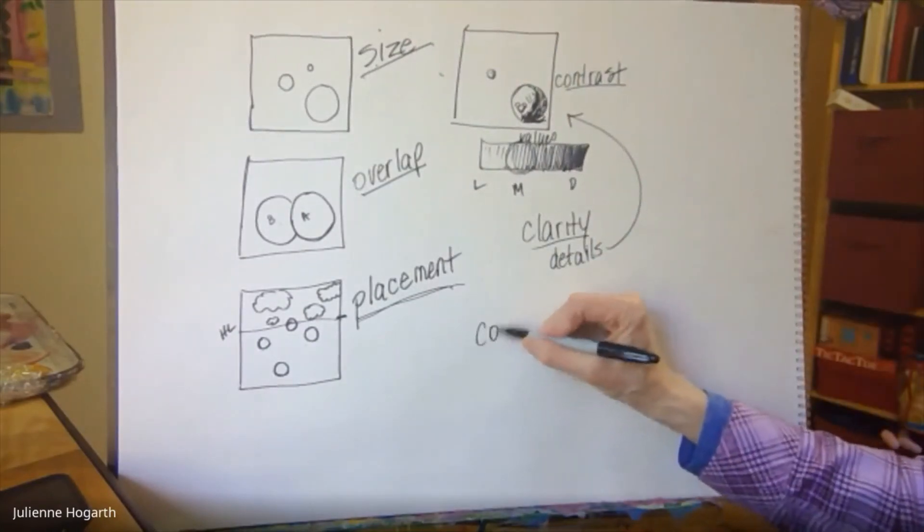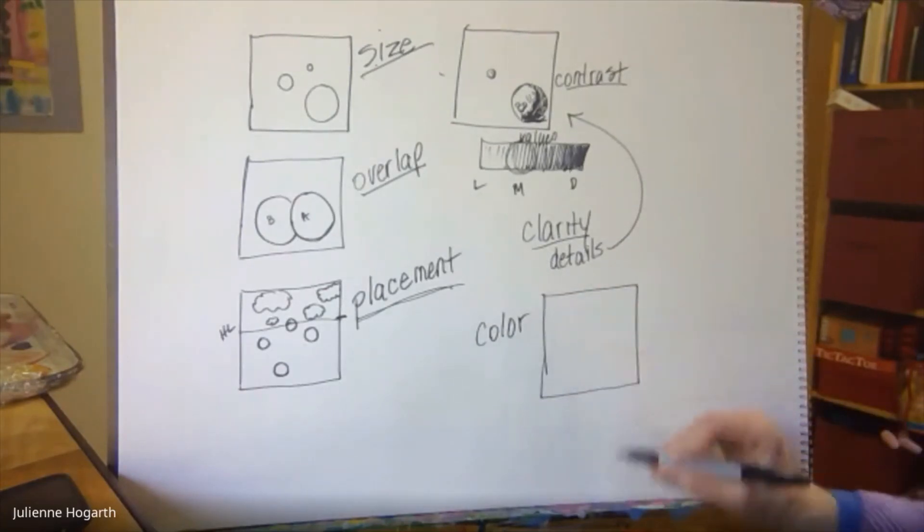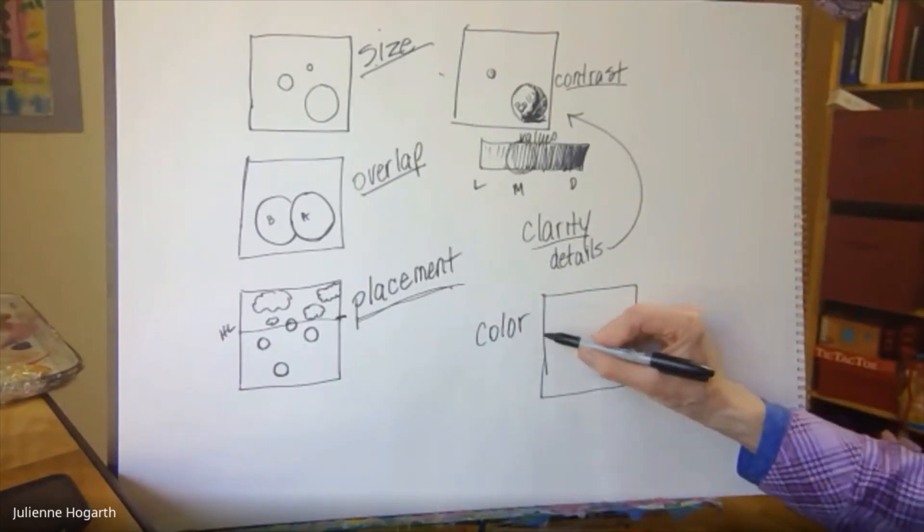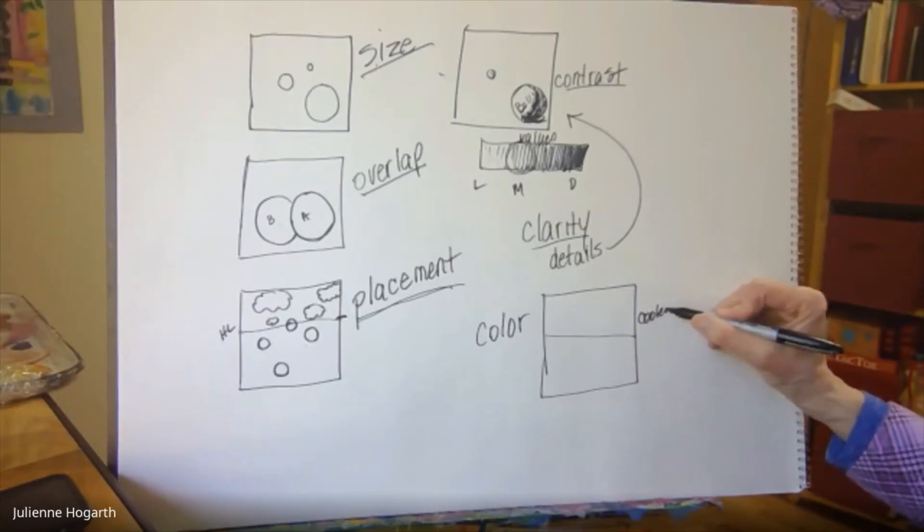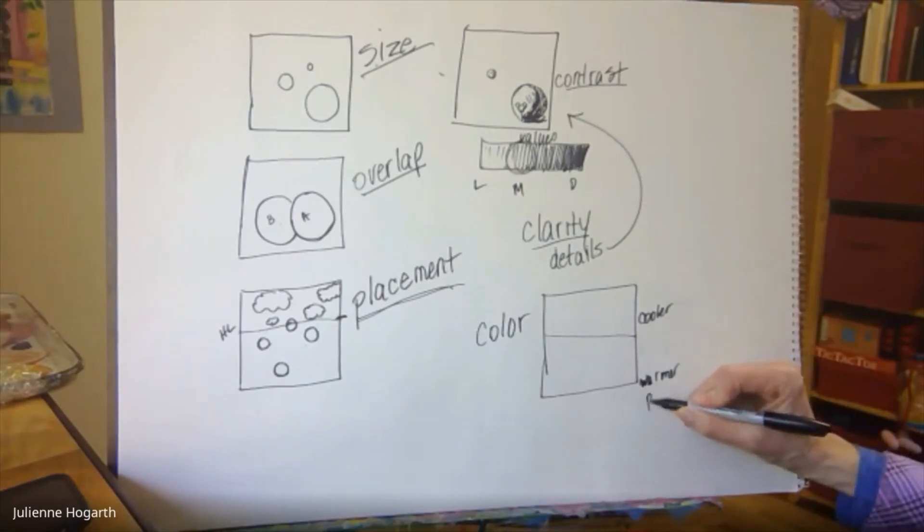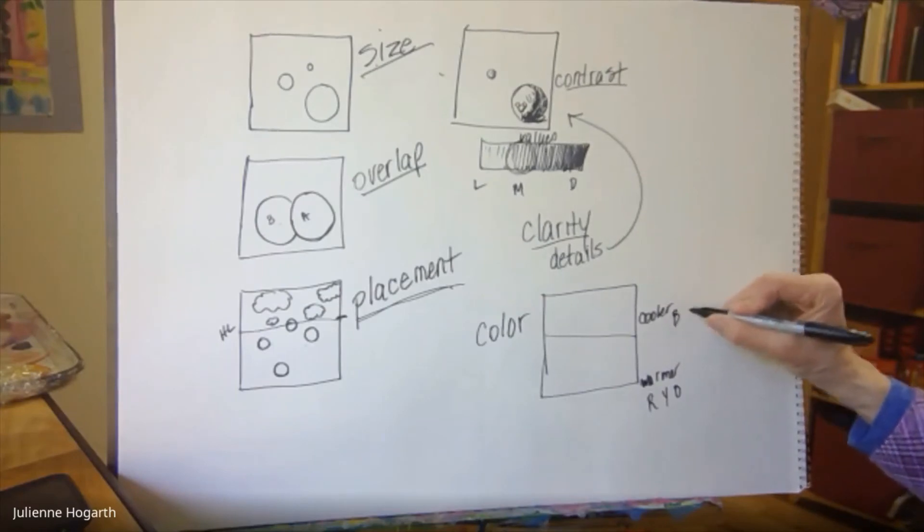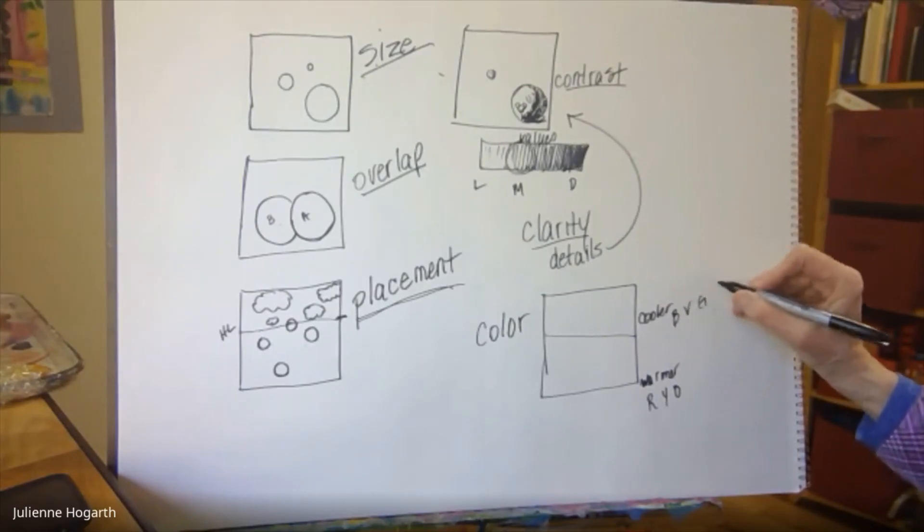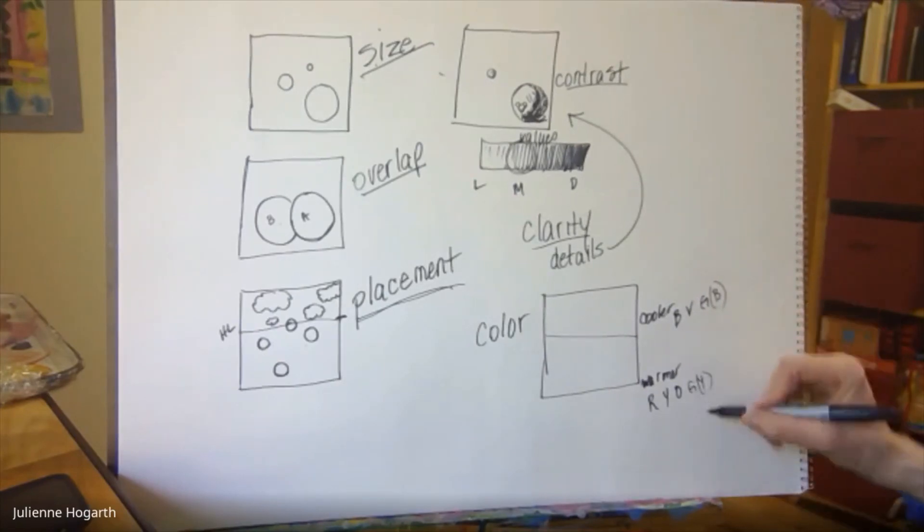And then the last one is color. And we're going black and white but I'll just show you. Far away or closer to the horizon line is cooler. And up close is warmer. So we're talking reds, yellows, oranges, cooler blues, violets, greens if there's a blue green and greens here if it's a yellow green. So green kind of goes back and forth.